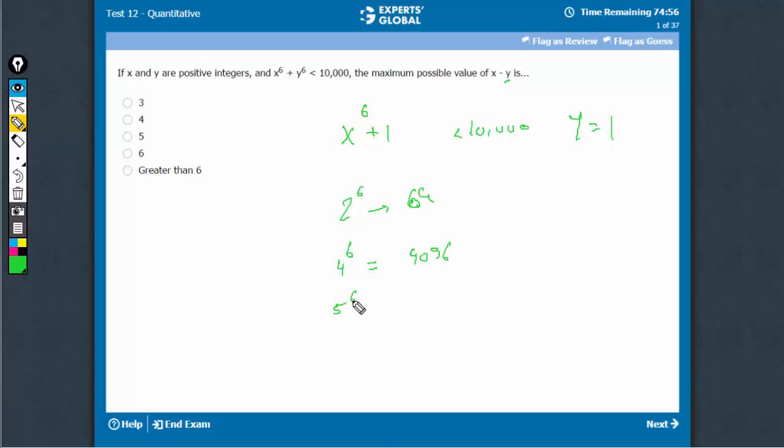5 raised to power 6 should be a very big number. That's 125 times 125. This would be greater than 10,000.